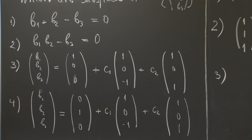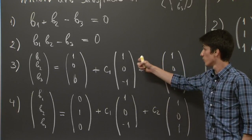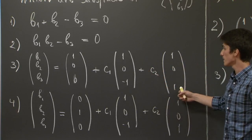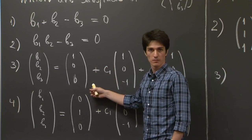Let's try 3. So the subset in question 3 is given as the linear span of these two vectors, (1, 0, -1) and (1, 0, 1), plus the vector (1, 0, 0).